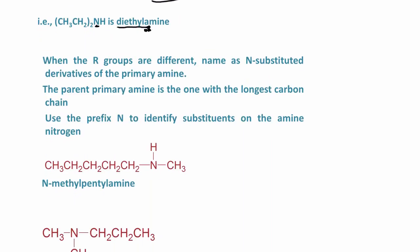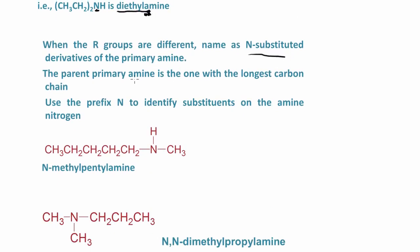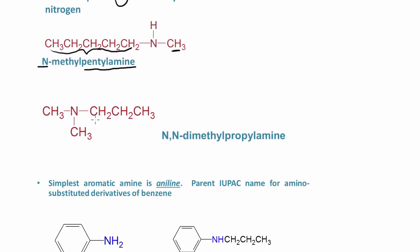In the case where the R groups are different, we name them as an N-substituted derivative of the primary amine. The parent primary amine has the longest carbon chain, and then we use the prefix N- to identify the substituent or substituents on the amine nitrogen. So with five carbons, we name that as a pentylamine, and we have a methyl group bonded to the nitrogen — this would be N-methylpentylamine. In another case, the longest alkyl group is a propyl group — that's a propylamine — and we have two methyl groups on the nitrogen, so this would be N,N-dimethylpropylamine.